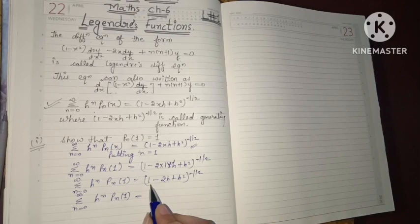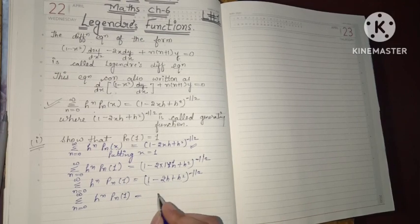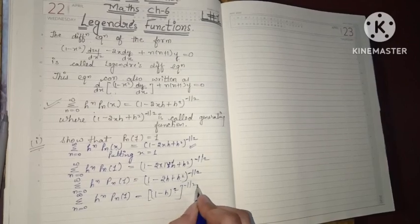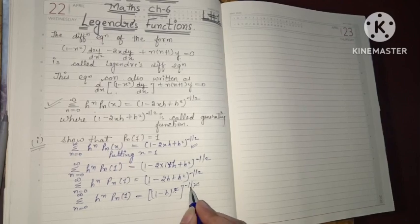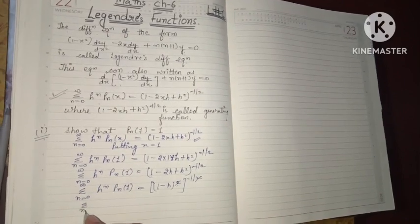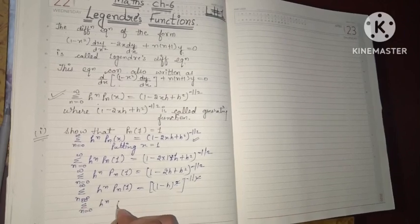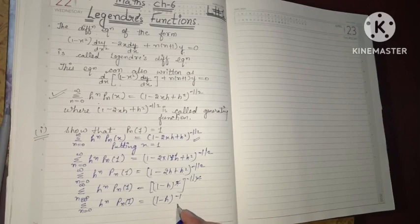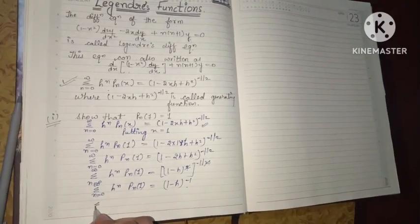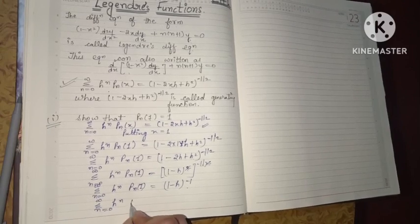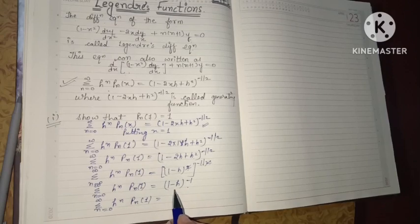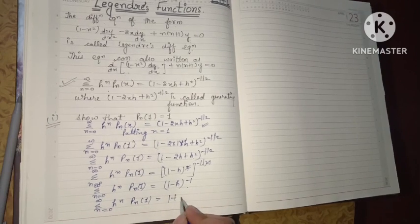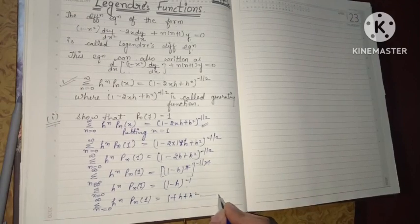So we have summation n equals 0 to infinity h to the power n times P_n(1) equals to (1 minus h) to the power minus 1. Expanding the right-hand side gives 1 plus h plus h squared plus so on plus h to the power n. On equating the coefficient of h to the power n from both sides, the coefficient on the right is 1. Therefore P_n(1) equals 1. Hence proved.